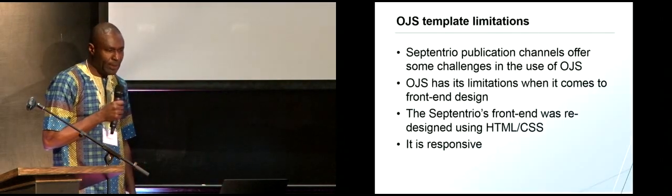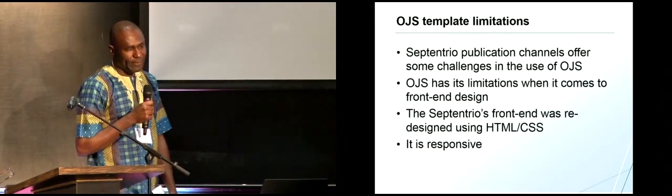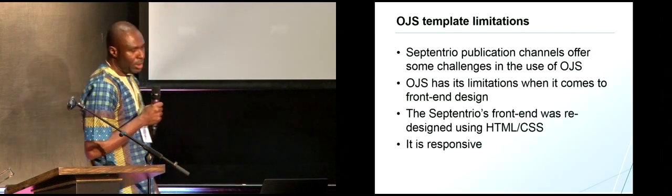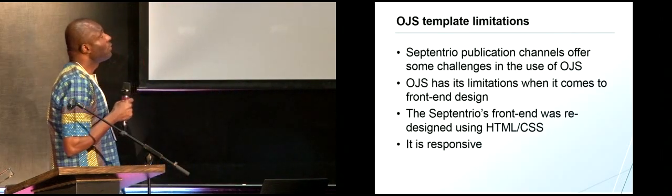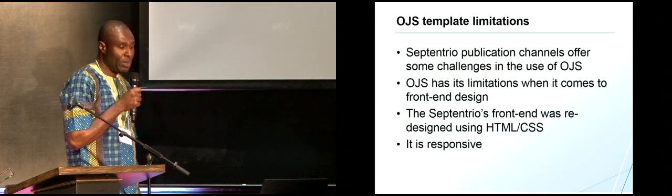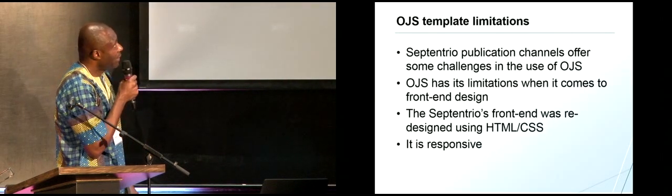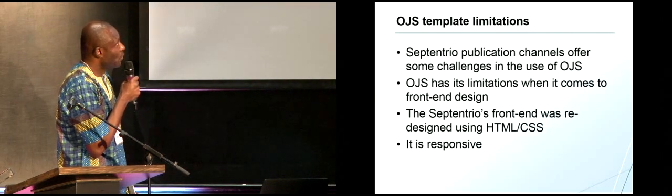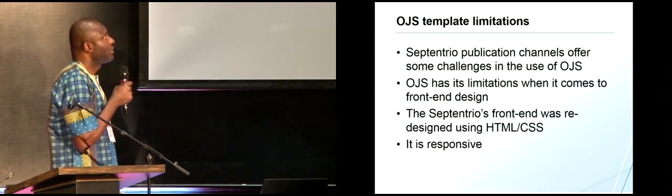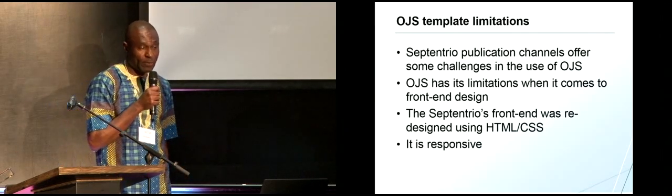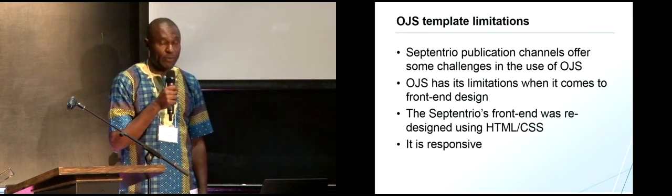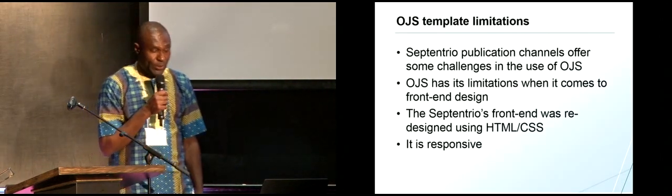Because we have different types of publications, we have some challenges, and we found out how to solve them. We felt that OJS has some limitations, especially in templates, so we had to redesign and modify certain things in OJS to suit our needs. We used HTML style sheets, and it's responsive. We are talking about OJS version 2, but we are moving to version 3 and doing the same thing.